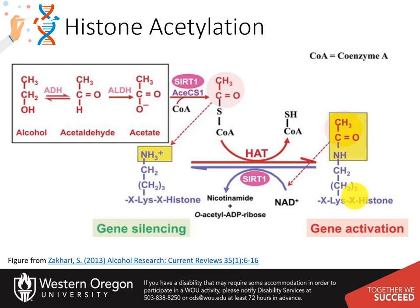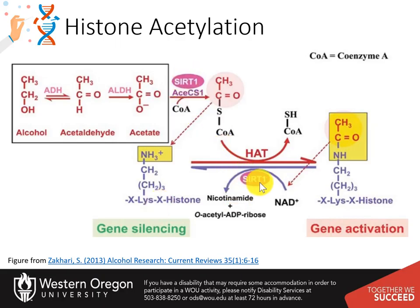Thus, higher levels of acetate promote histone acetylation and increase gene expression. Note in the diagram shown that SIRT1 also deacetylates histones, resulting in gene silencing. Thus, SIRT1 is a sensor that balances gene activation and silencing in the cell based on the cell's energy status. Alcohol metabolism results in acetate formation, which is used in extrahepatic tissues to produce acetyl-CoA, upregulating histone acetylation within those tissues.